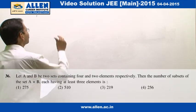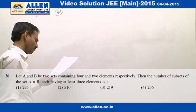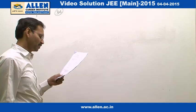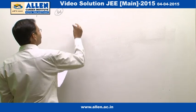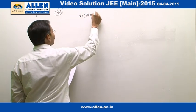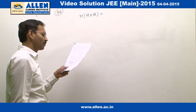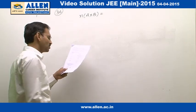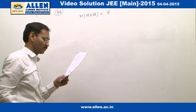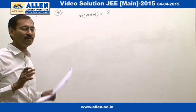Question number 36 — we have seen a similar kind of problem in previous years; again a very simple problem. The number of elements in A cross B will be the number of elements in A multiplied by number of elements in B, which means 8. There are 8 elements in set A cross B and we want to find the number of subsets having at least 3 elements.